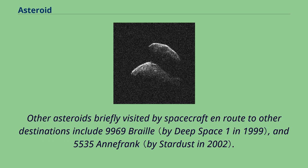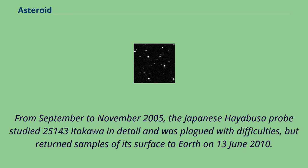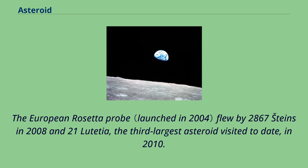Other asteroids briefly visited by spacecraft en route to other destinations include 9969 Braille and 5535 Annefrank. From September to November 2005, the Japanese Hayabusa probe studied 25143 Itokawa in detail and, despite being plagued with difficulties, returned samples of its surface to Earth on June 13, 2010. The European Rosetta probe flew by 2867 Steins in 2008 and 21 Lutetia, the third-largest asteroid visited to date, in 2010.